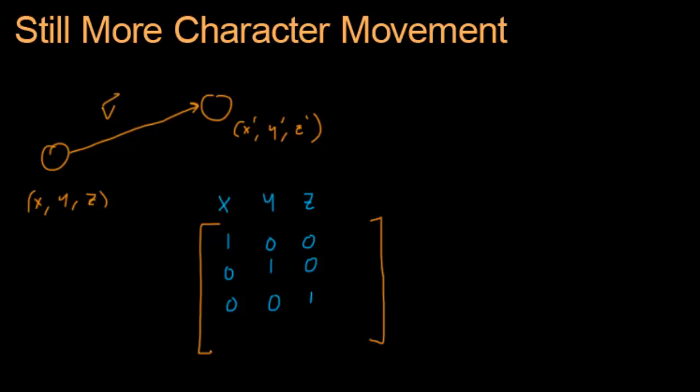So we're going to add one new column here. I'm going to call it T. T stands for translation, because in matrix speak, this operation of moving a point from here to here by adding a vector to it, that's called a translation.